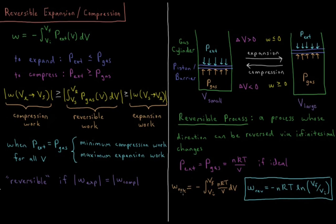So then the reversible work is the integral from the initial volume to the final volume of NRT over V, DV. NRT are constants with respect to volume, so we can pull those out. Minus NRT, you pulled that out. So then we have the integral of DV over V, which the integral of 1 over X is natural log of X.